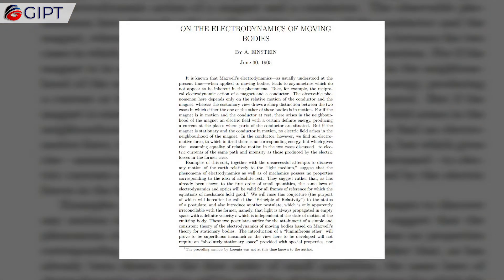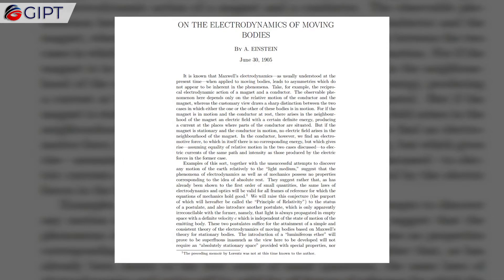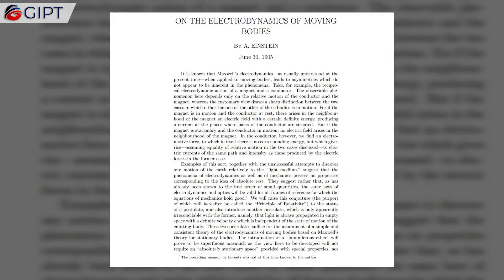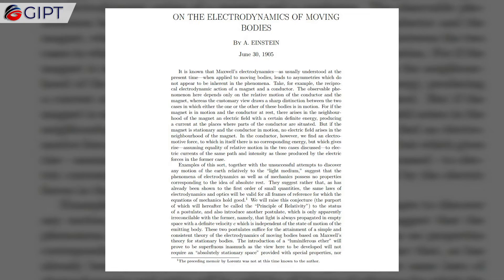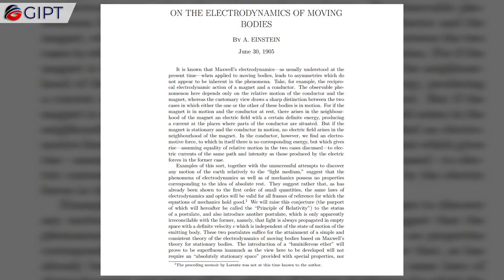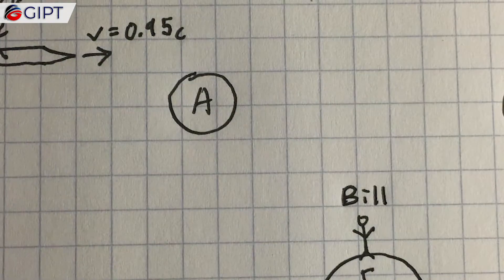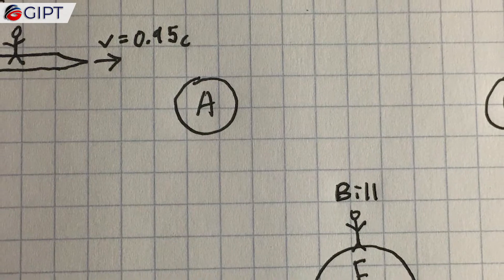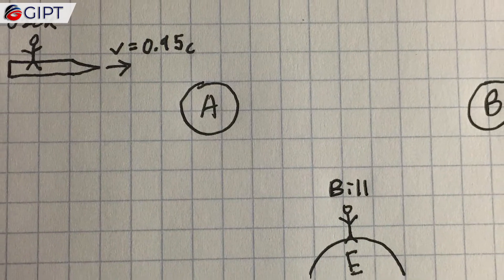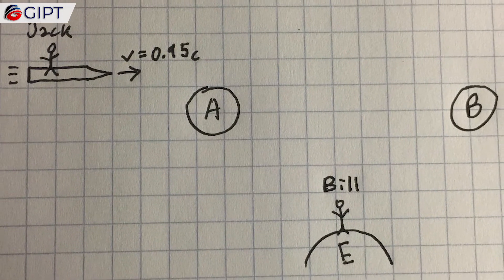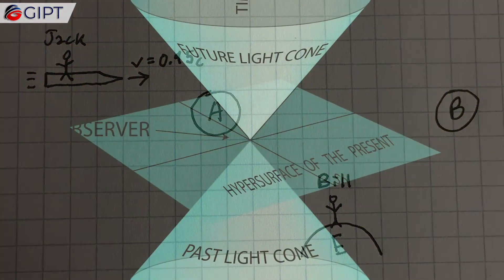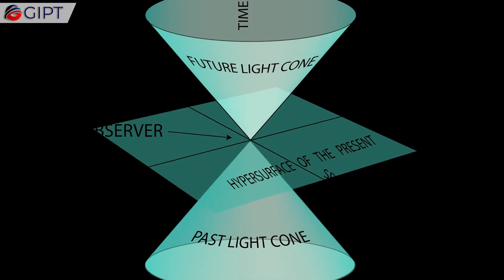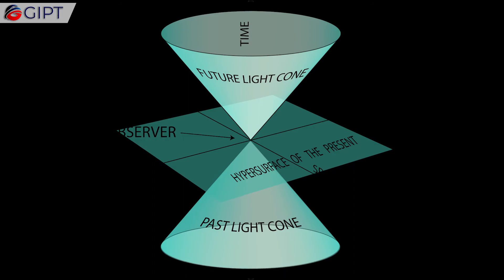It reconciled conflicts between Maxwell's equations and the laws of Newtonian mechanics by introducing changes to the laws of mechanics. Observationally, the effects of these changes are most apparent at high speeds, where objects are moving at speeds close to the speed of light. The theory developed in this paper later became known as Einstein's special theory of relativity.